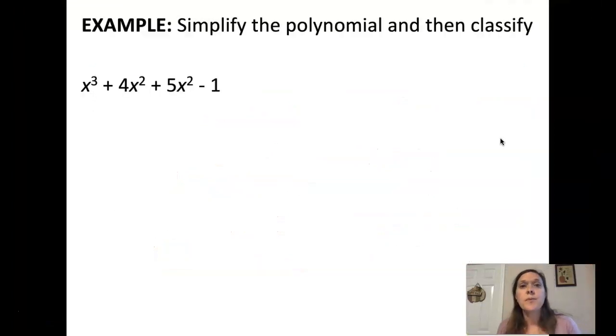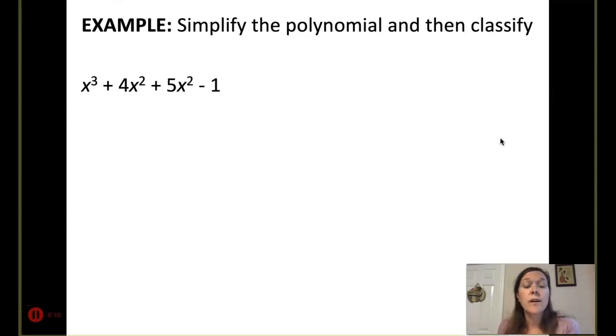Let's do some classification. We're going to simplify the polynomial and then classify it. We have x cubed plus 4x squared plus 5x squared minus 1. When I combine like terms in the middle, we end up with x cubed plus 9x squared minus 1. Already written in standard form, my highest degree is 3, so it's a cubic. I've got three terms, so cubic trinomial.